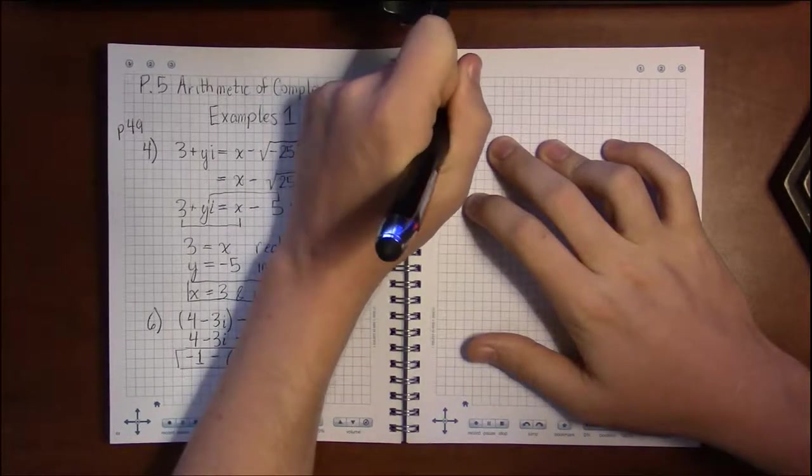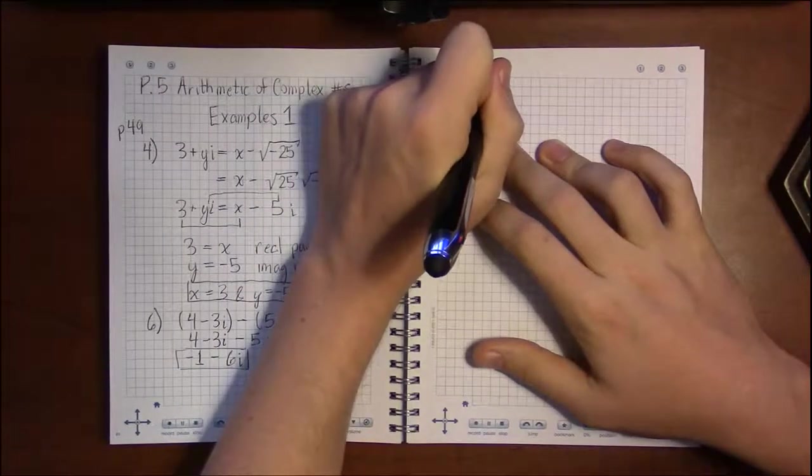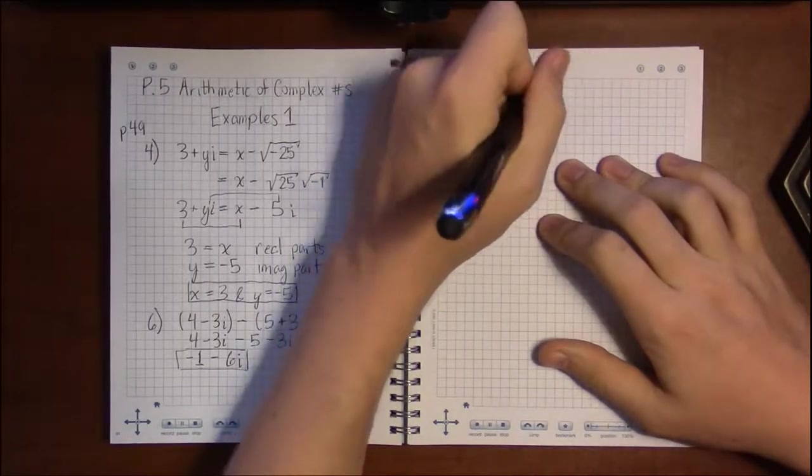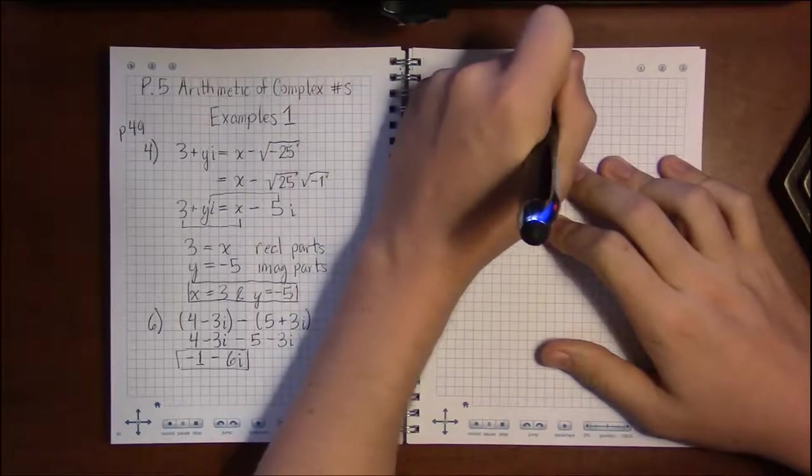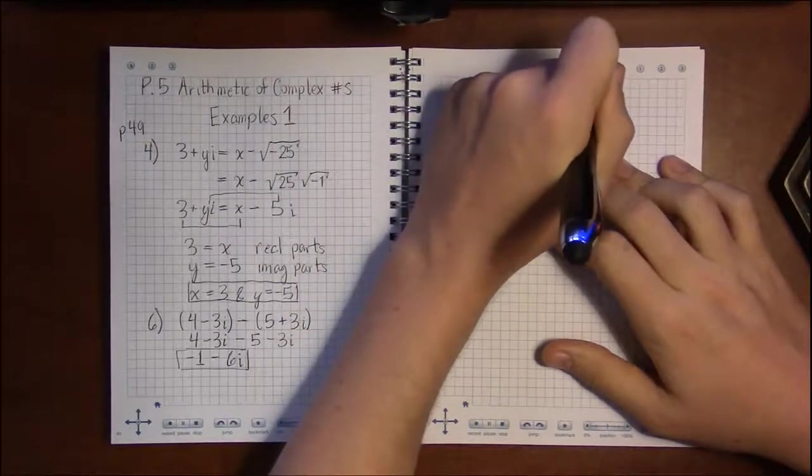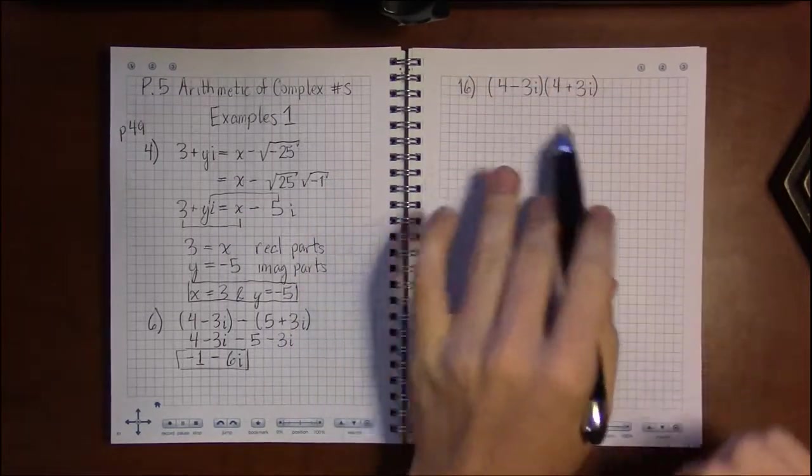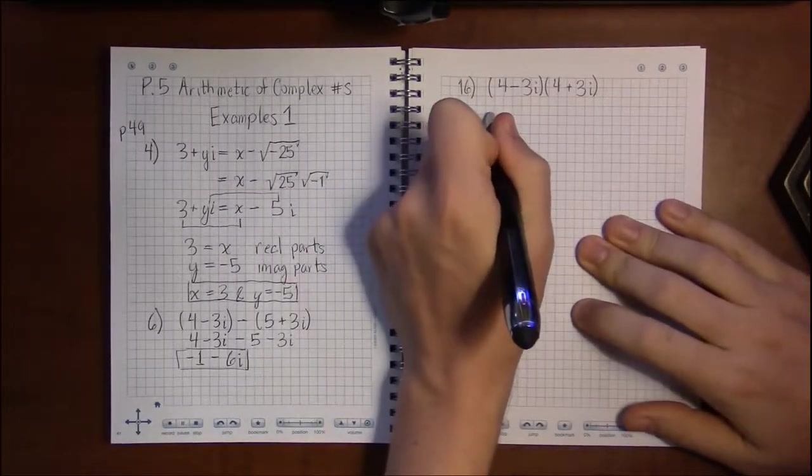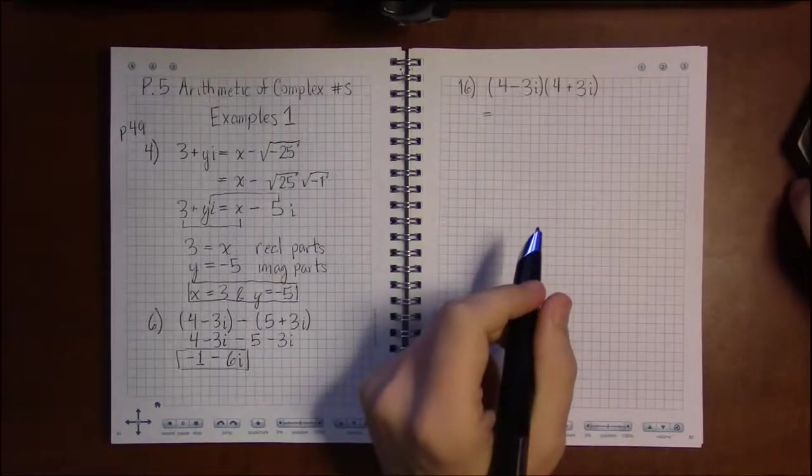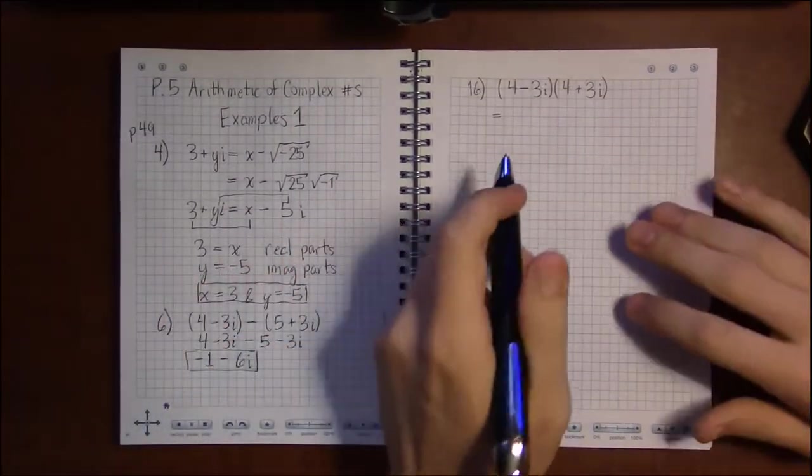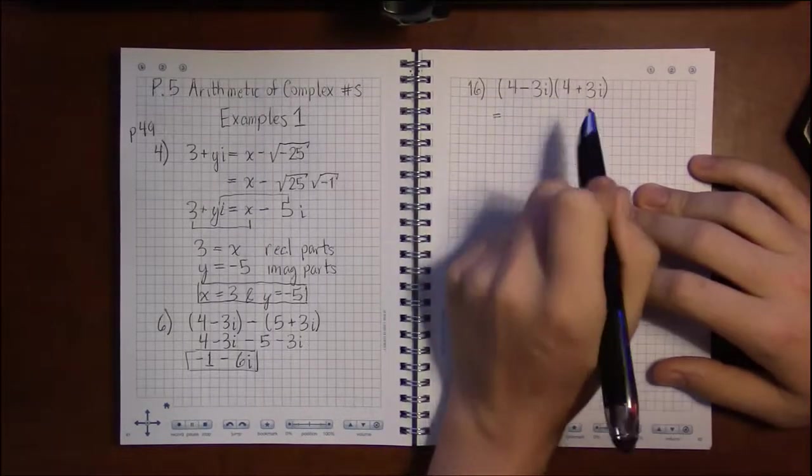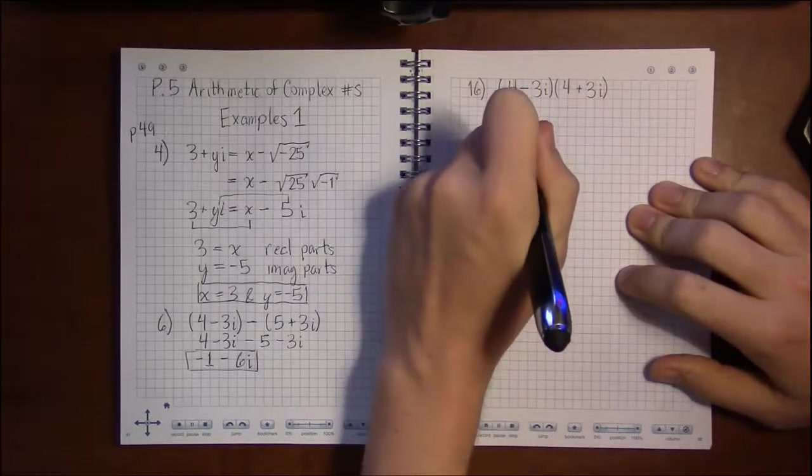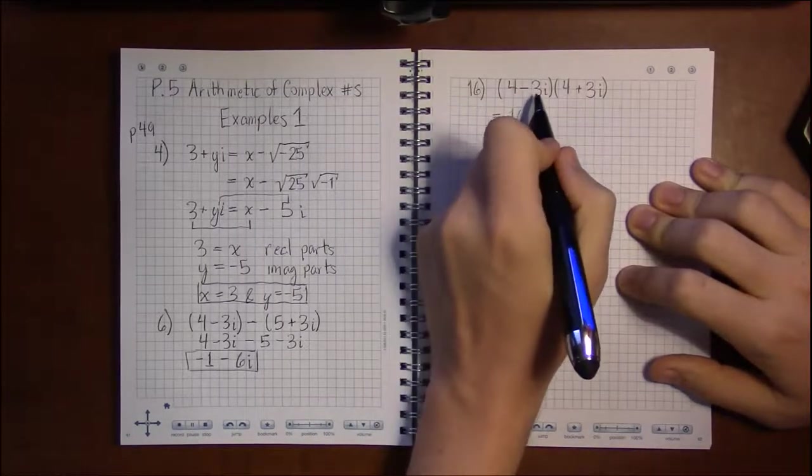4 minus 3i times 4 plus 3i. Just looking at this, I bet that we're going to get a number out that doesn't have any i's involved, and I'll explain why I can see that once we're done. Okay, so you have a formula if you choose to use that. I choose to distribute, to FOIL things out.